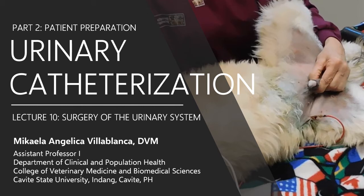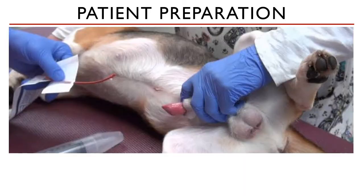That is the first part of patient preparation: anesthetize your animals if you are going to unblock them for urinary catheterization. The process I will be discussing today is for routine urinary catheterization before surgery. The UCath placements for feline urethral obstruction are outlined in the previous reading assignments.